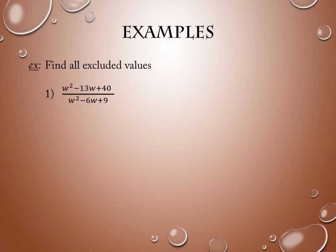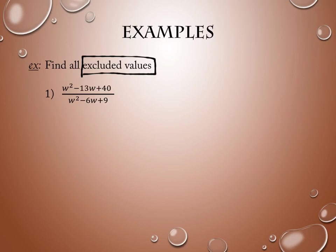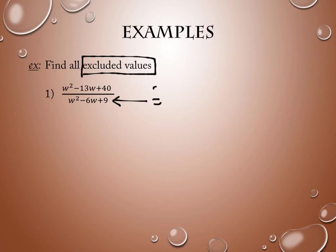It asks you about excluded values. Excluded values means values that you cannot use. In particular, when we're dealing with fractions, I cannot have my denominator equal to zero. So if I'm going to exclude a value, it would be a value that would make my denominator equal to zero. That doesn't mean it's the number zero — it could be, but it doesn't have to be. What I want to know is where does this denominator equal zero. That location is an excluded value.